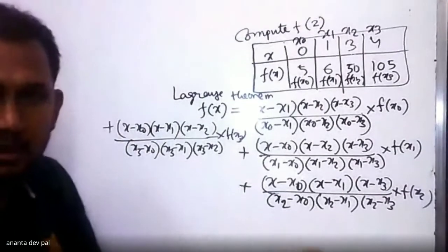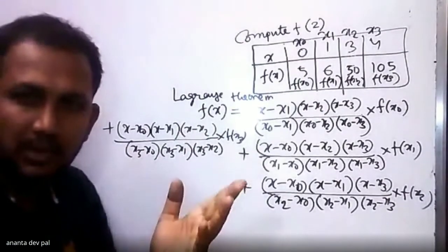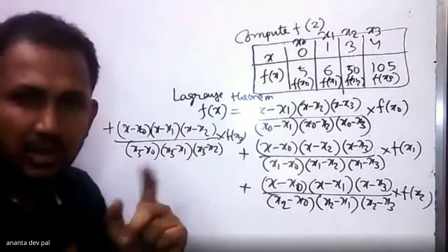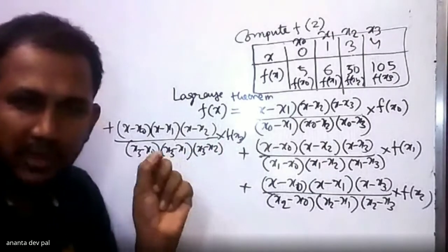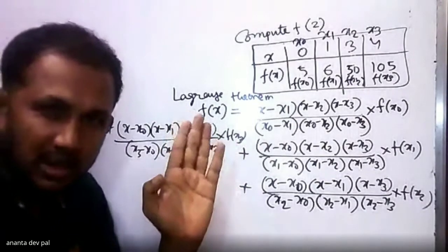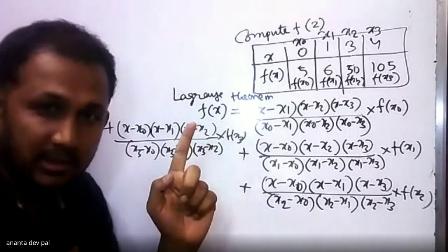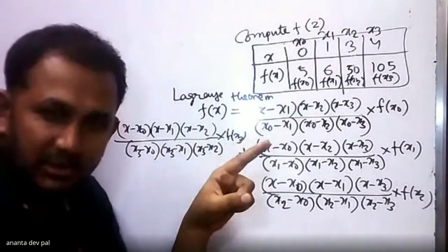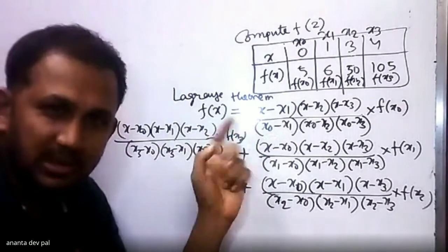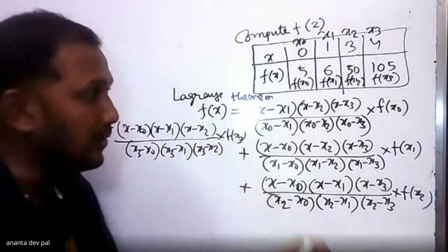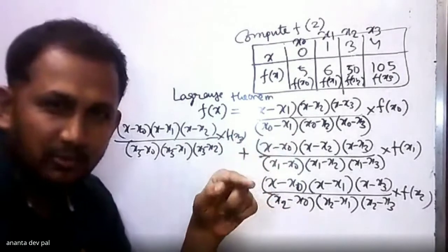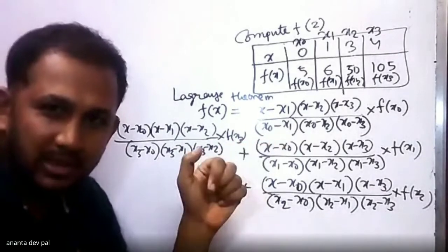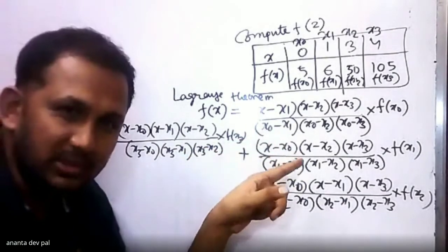Consider this. Depending on the values of x0, x1, x2, x3, you can easily create the formula. x is the given value to find out. Delete x0 from the table and create the first term: (x minus x1)(x minus x2)(x minus x3) divided by (x0 minus x1)(x0 minus x2)(x0 minus x3), multiplied by f(x0). For the second term, x1 is omitted: (x minus x0)(x minus x2)(x minus x3) divided by (x1 minus x0)(x1 minus x2)(x1 minus x3).